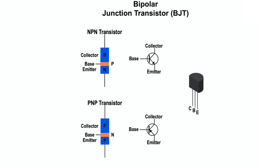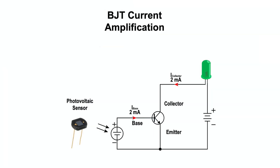The BJT is a current amplifier, where a small current flow from the base to the emitter results in a larger flow from the collector to the emitter. The example shows the way a BJT is used as a current amplifier to amplify the small current signal from a photovoltaic sensor.